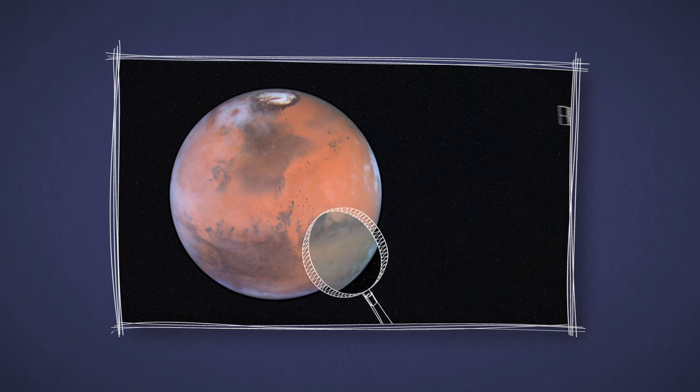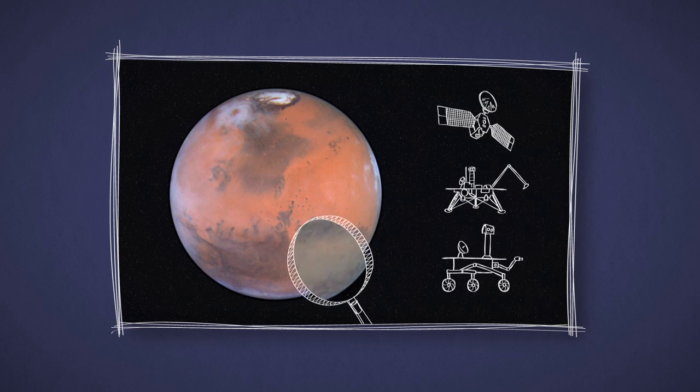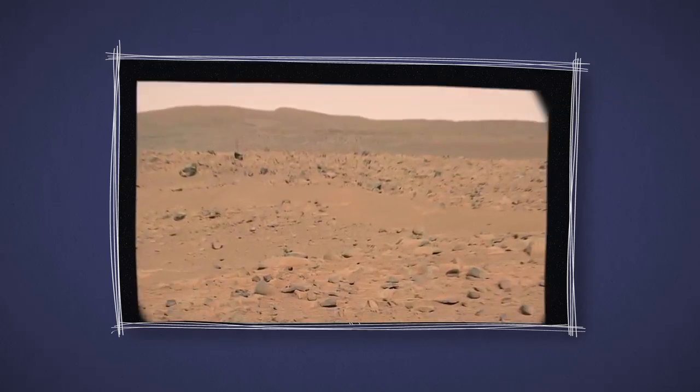But if you get a close-up view, with an orbiter, lander, or rover, you'll see that a lot of Mars is actually more of a butterscotch color.